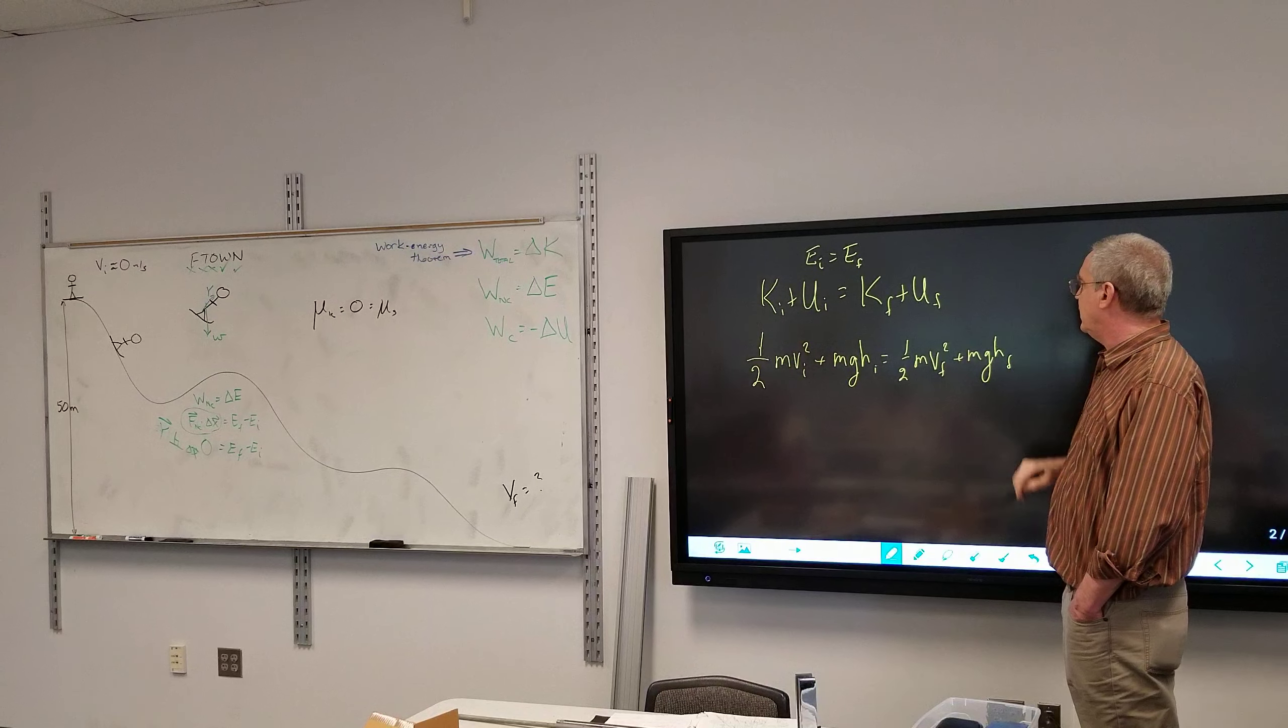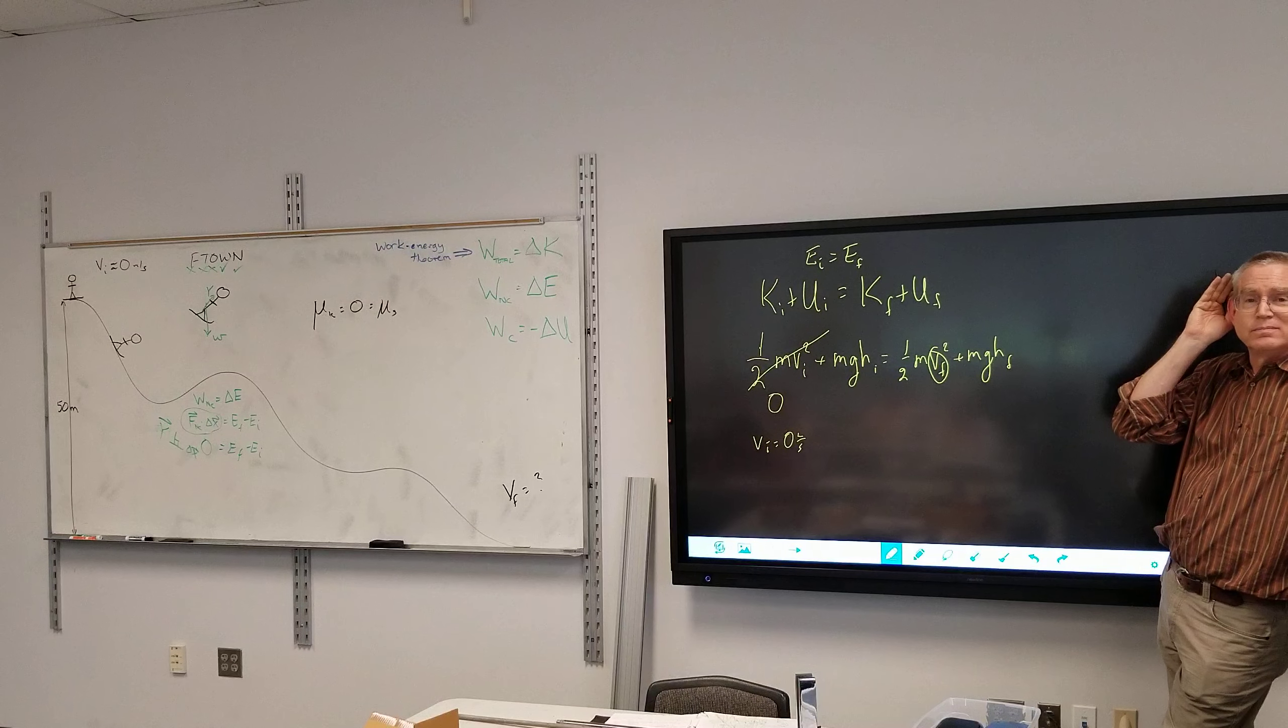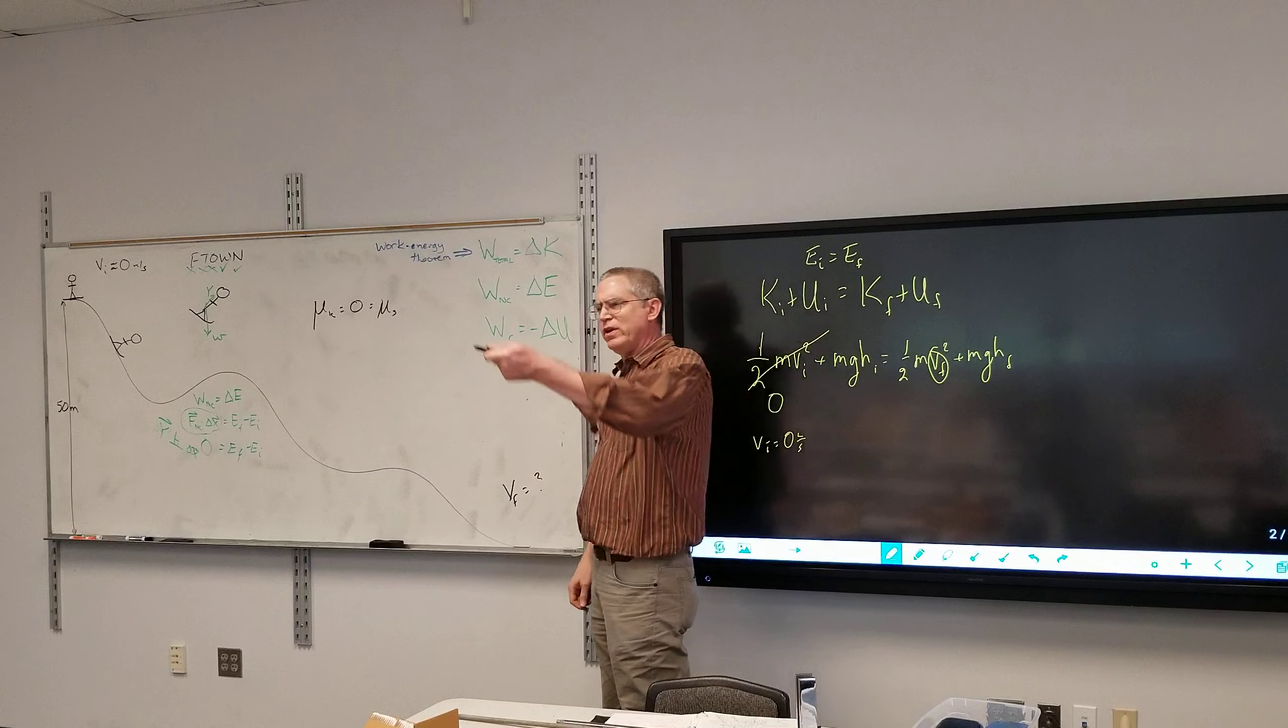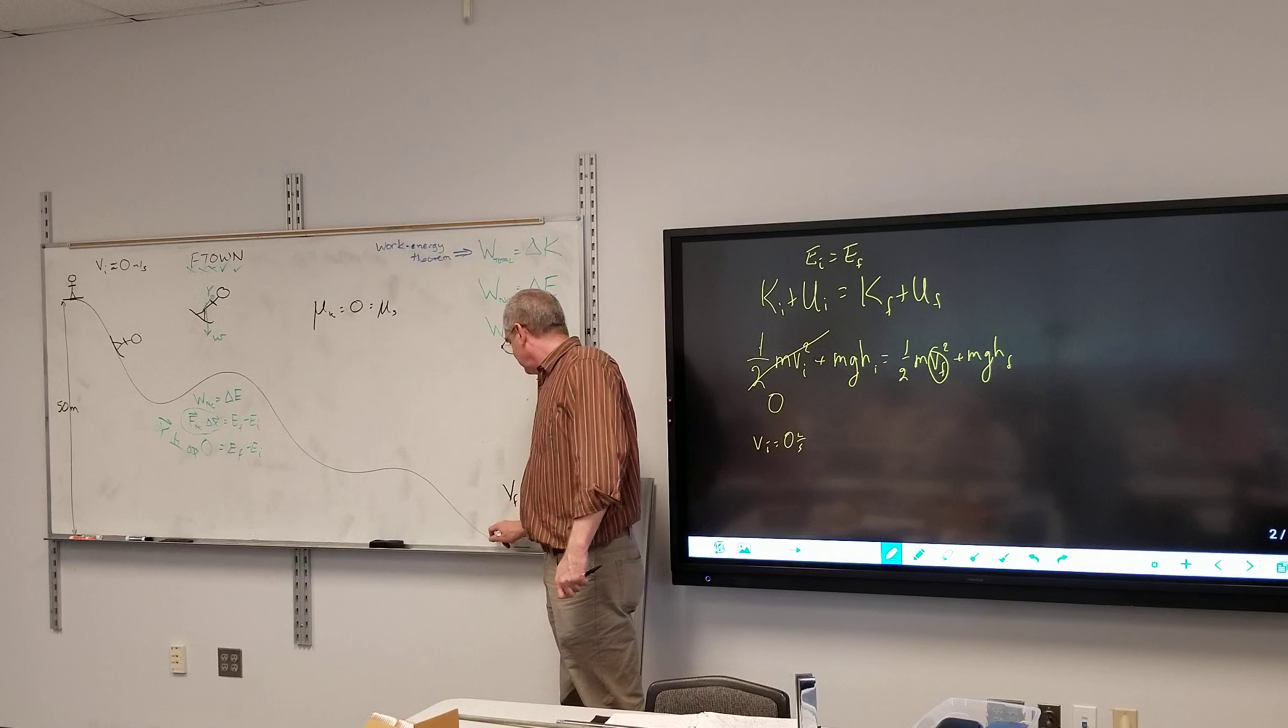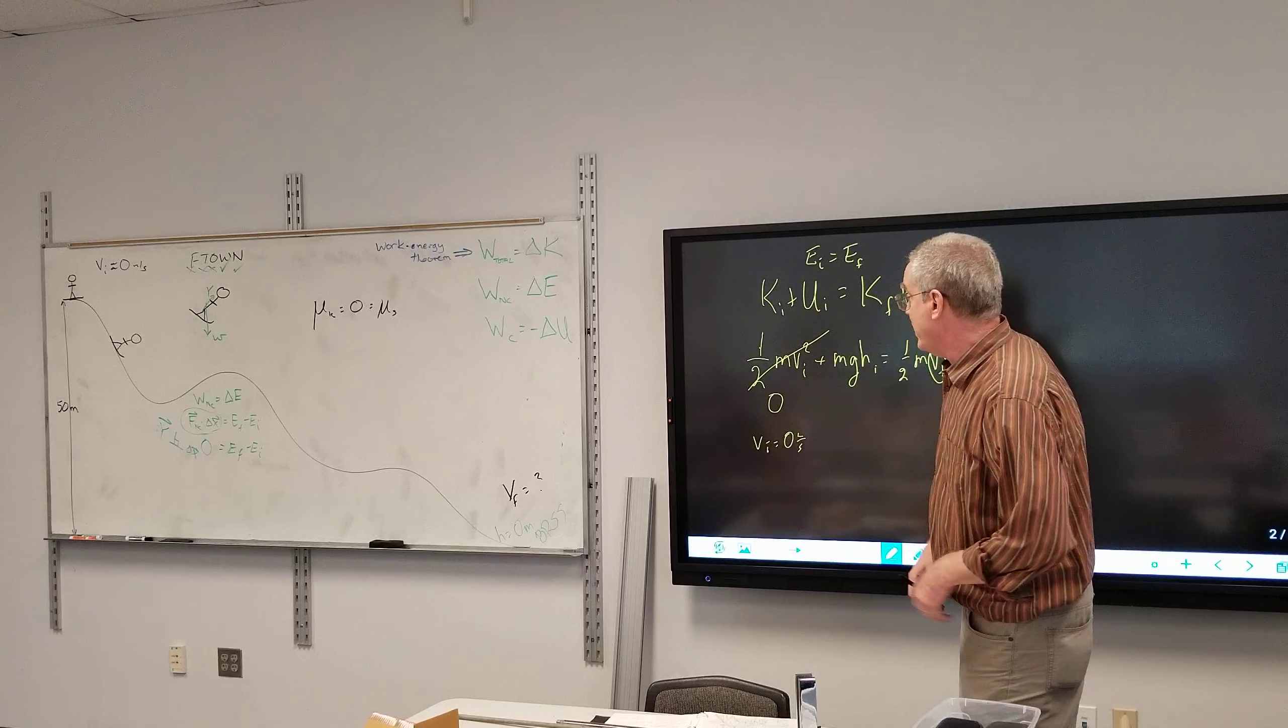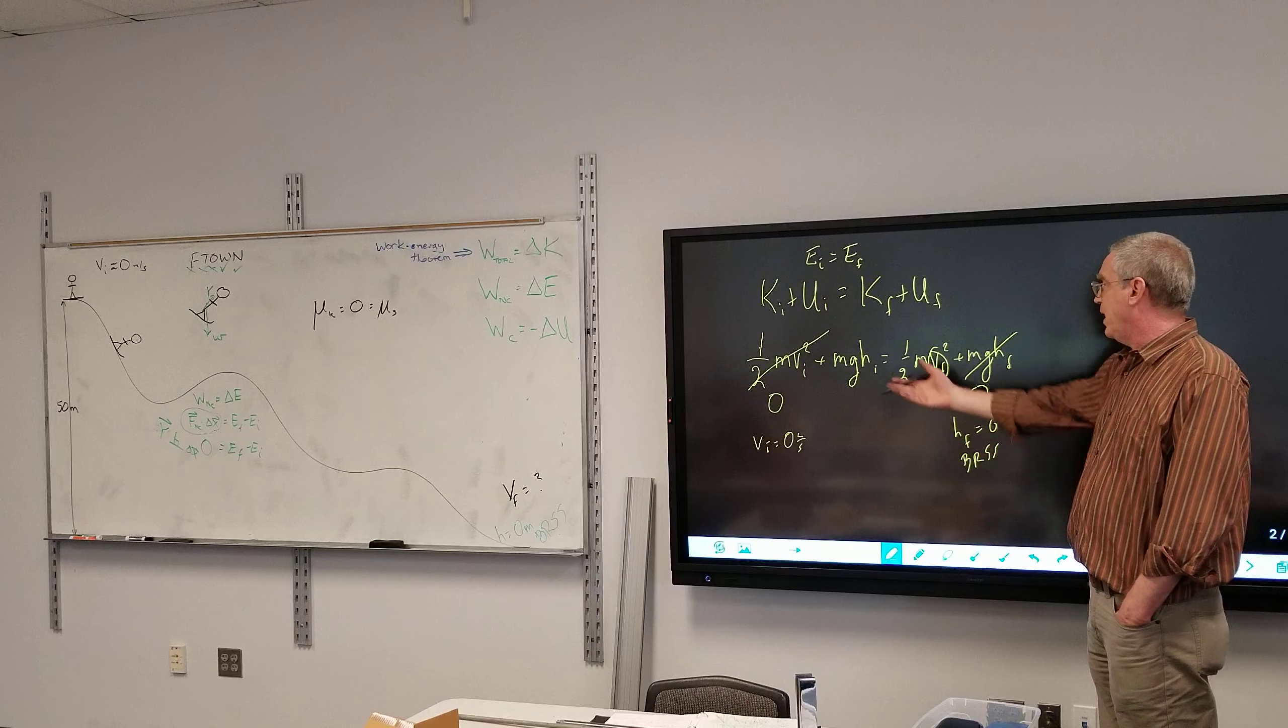What's equal to zero? Initial. Initial what? Okay, so the initial kinetic energy is zero, because vi equals zero. What else is equal to zero? Yeah, that would have been fine. We could have done that. If the initial height is zero, what would the final height be? Maybe 50. Yeah. So now, that's zero, because h final is equal to zero.